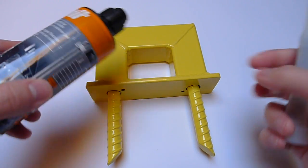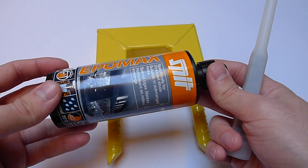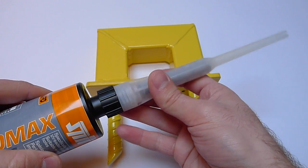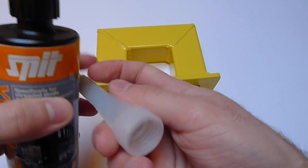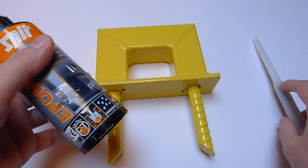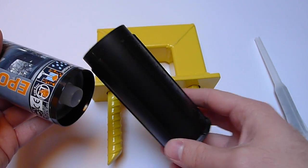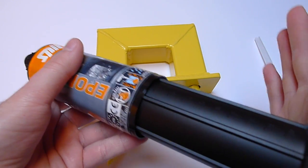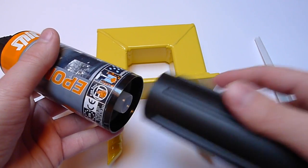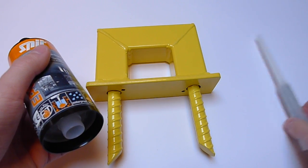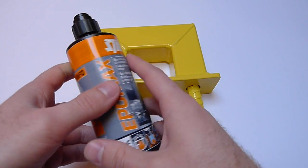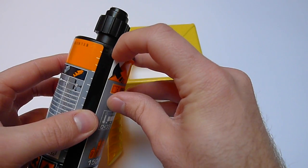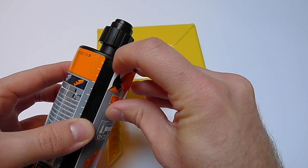So this chemical bolt also comes with this little tool which you have to screw on here when opening it, and then you use this to push the chemical bolt out. You have to work pretty fast because the chemical reaction will start in a few minutes.